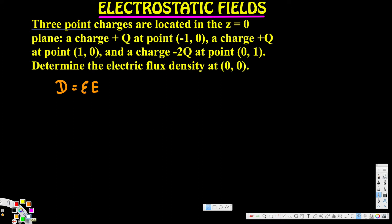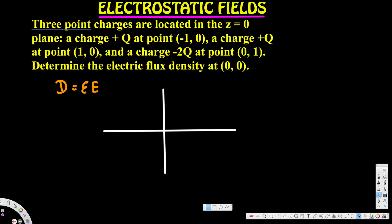We start everything from the origin. This point here is (0, 0). They say we have a plus q charge at (-1, 0), so on the x-axis at negative one, y is zero. Since the charge is positive, the electric field goes away from it, so from the origin's point of view it points toward the origin — in the positive x direction.